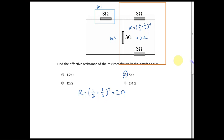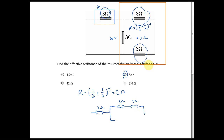Let me redraw the circuit to make it clearer. From the first 3 ohm resistor, current reaches a split point and divides into two branches: one branch has a 3 ohm resistor, and the other has just a 3 ohm resistor. The two branches then rejoin.